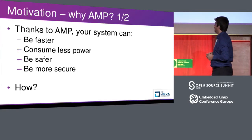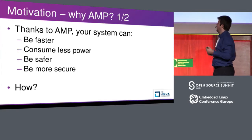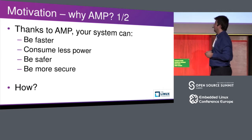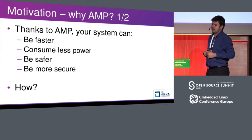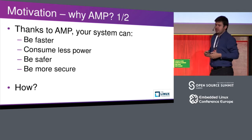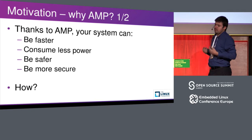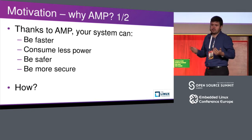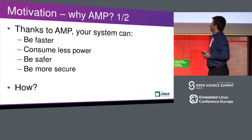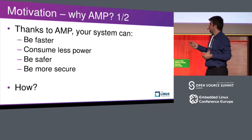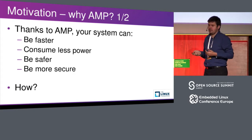First, motivation. Why do you use AMP when there is SMP? Thanks to AMP, your system can be faster — because there are multiple cores — can consume less power, can be safer, and can be more secure.